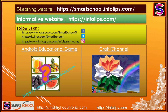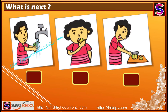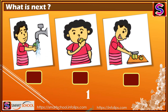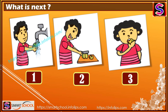Make sure to follow us on Facebook, Twitter, and Instagram, and do check our Android game and craft channel links in the description. So let's start. What is next? First we're gonna wash the food, then cut it, and then eat it. So it's gonna be like one, two, three, and the actual sequence is one, two, three.